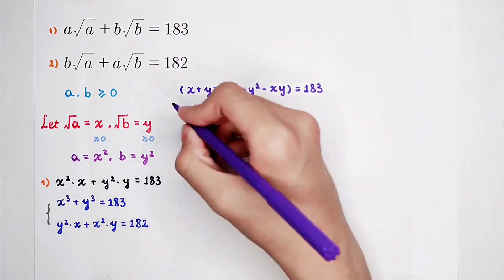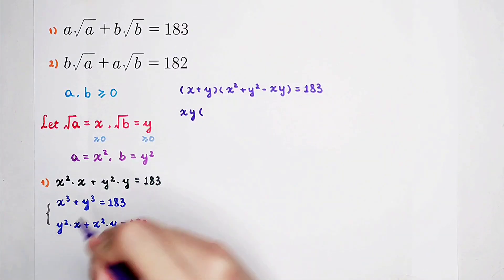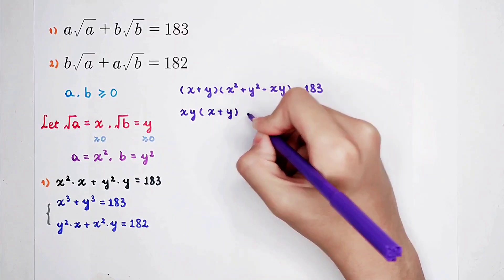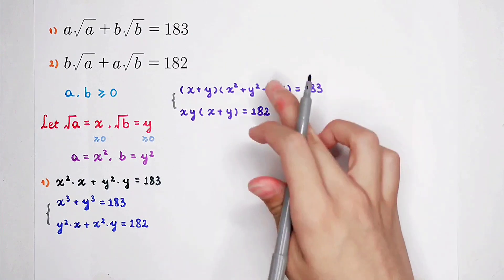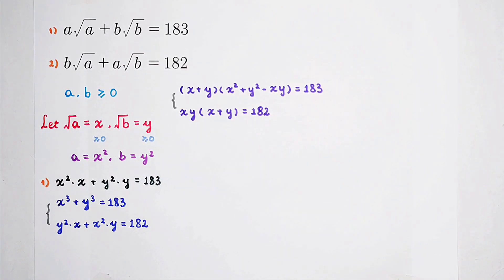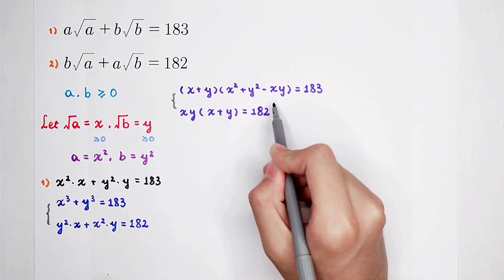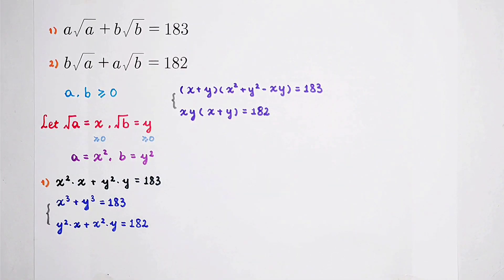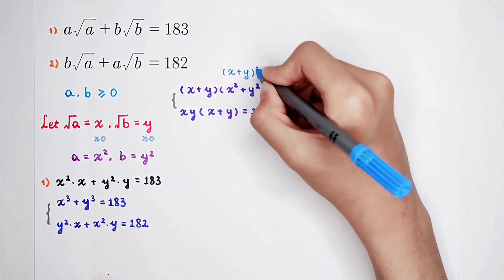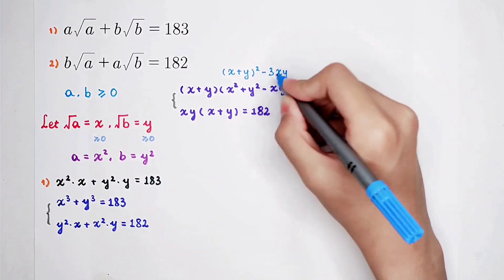In the second equation, on the left-hand side, xy can be factored out, giving xy times (y plus x), which is xy times (x plus y), equals 182. Now, x squared plus y squared minus xy can also be written in terms of x plus y and xy. We know x squared plus y squared minus xy equals (x plus y) squared minus 3xy.